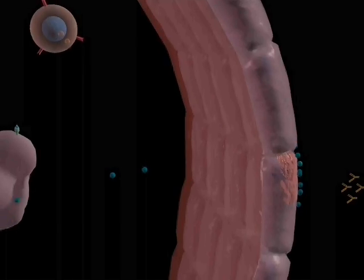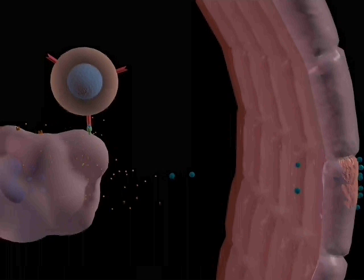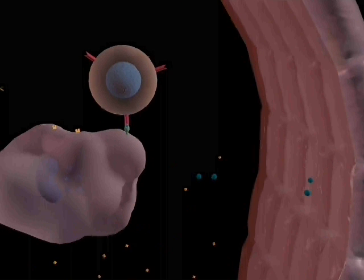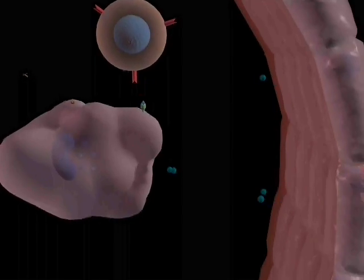However, if there are specific T cells which recognize bacterial peptides presented by the macrophage, then the T cells release interferon gamma which activates the macrophages to destroy the bacteria they have taken up.